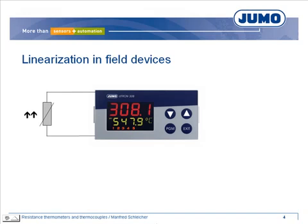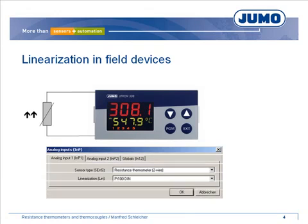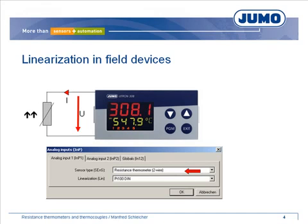After the connection of a PT100 to a field device as an example, we select resistance thermometer as sensor type for the corresponding input. The field device uses a defined direct current. On the basis of the dropping voltage and Ohm's law, the resistance is calculated. Different linearization possibilities are stored in the field device. When the linearization is set to PT100, the device calculates the temperature based on the resistance value.